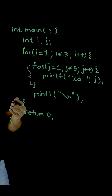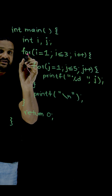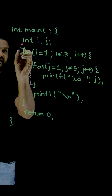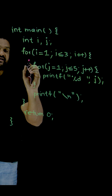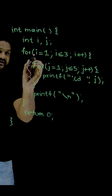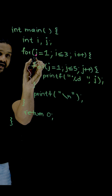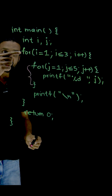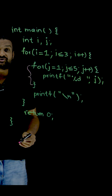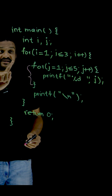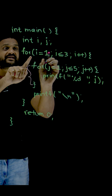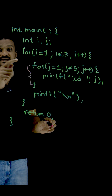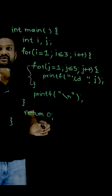Once the program gets executed, the value of i and j are declared, and the value of i is initialized to 1. We are going to come into this loop. Can you guess how many iterations this loop is going to make in the entire program execution?